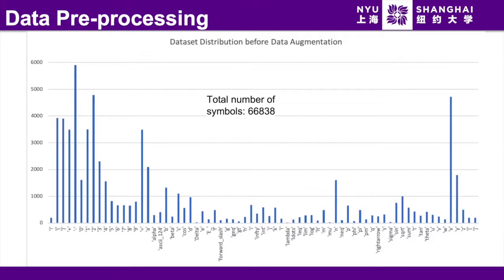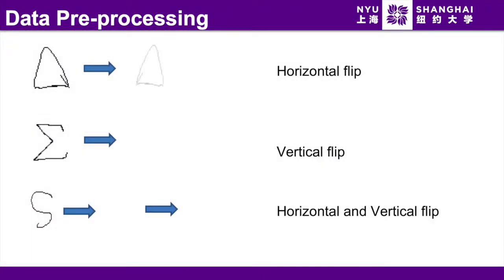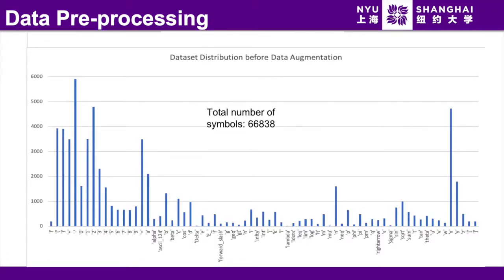So we decided to apply data augmentation. We do three operations on several classes of symbols: horizontal flip, vertical flip, and a combination of both. After the data augmentation, the total number of data is increased to over 77,000 images.